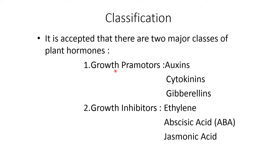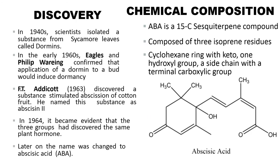One is growth promoters and another one is growth inhibitors. Under growth promoters, auxin, cytokinins, and gibberellins are present, whereas in the case of growth inhibitors, ethylene, abscisic acid, and jasmonic acid come.